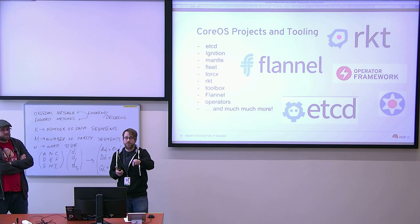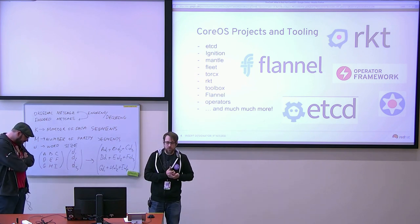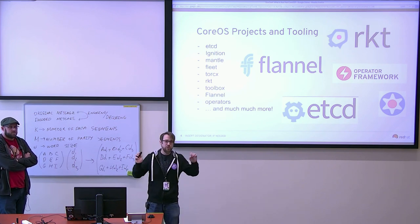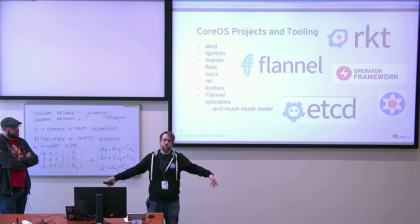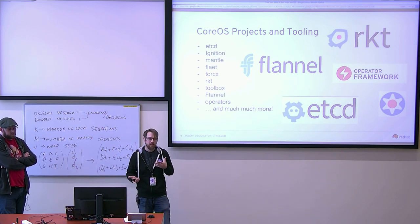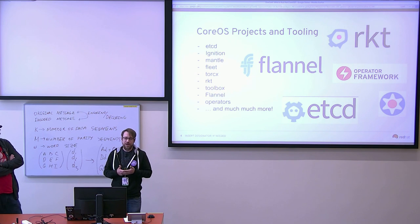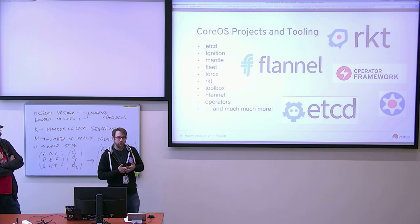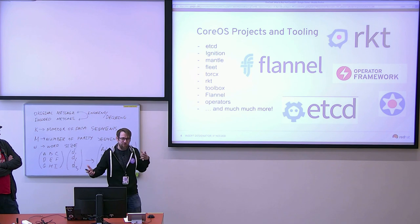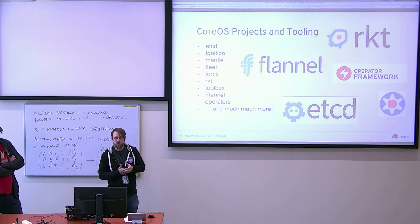Fleet was an early one with CoreOS — it scheduled systemd units into a cluster so you could run things and schedule where workloads ran within that cluster. It also acted as a distributed system for systemd itself. It's not really used much any longer. Part of that was a stampeding-herd issue: if you had thousands of machines all checking into etcd, even etcd can't always keep up when thousands are hammering and holding on, so there was a move away from it.